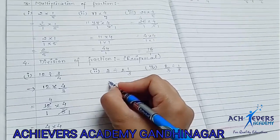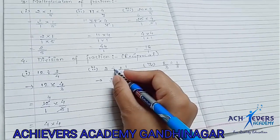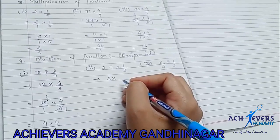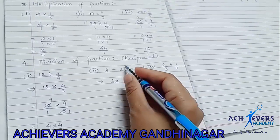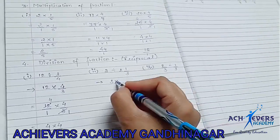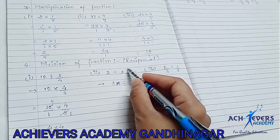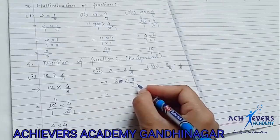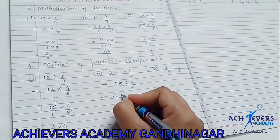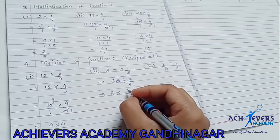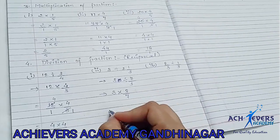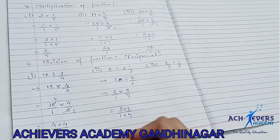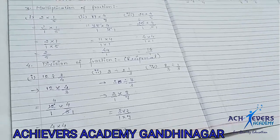Similarly, here in question 2, we have 3 divide sign. One thing here is that the sum is already in a mixed fraction, so we will first convert it to an improper fraction. 3 twos are 6 and 6 plus 1 is 7, so it becomes 7 by 3. Now, replace the divide sign with multiply, and the reciprocal means 3 on top becomes 3 by 7. So we get 3 into 3 over 1 into 7 — that is 9 by 7.